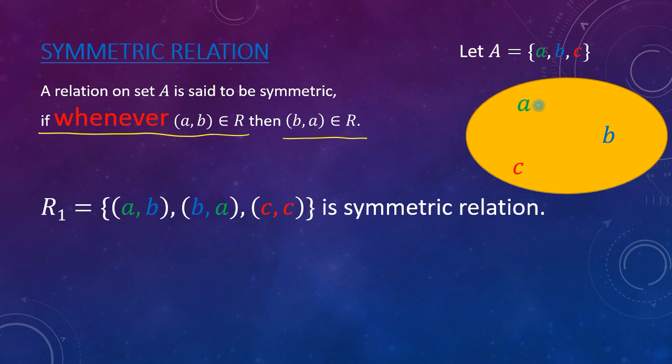Okay, let us understand with an arrow diagram. Whenever a is related to b, then b must be related to a. Okay, there may be a situation where a is not related to b. In that case, ordered pair b comma a may or may not be in the relation.